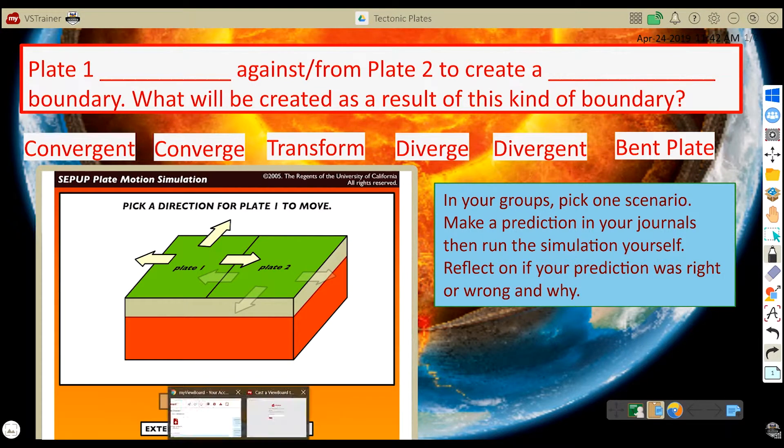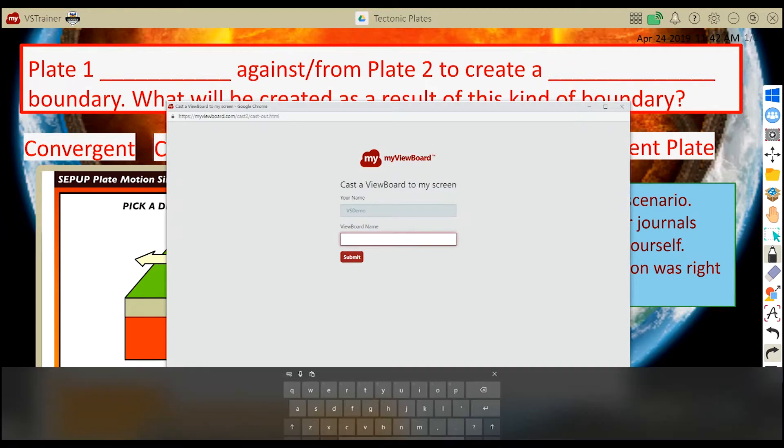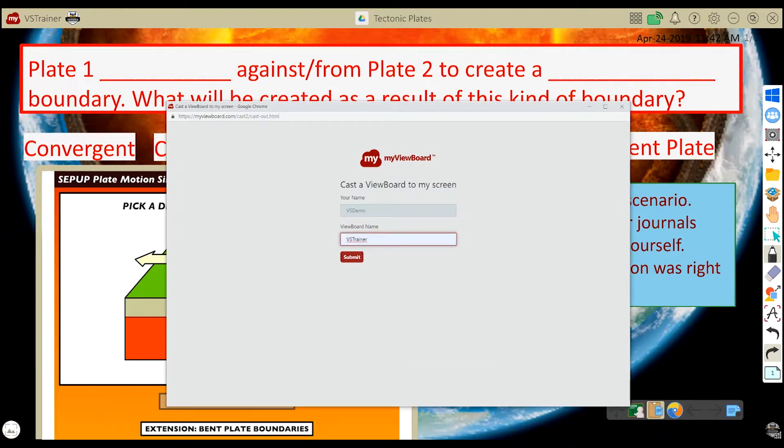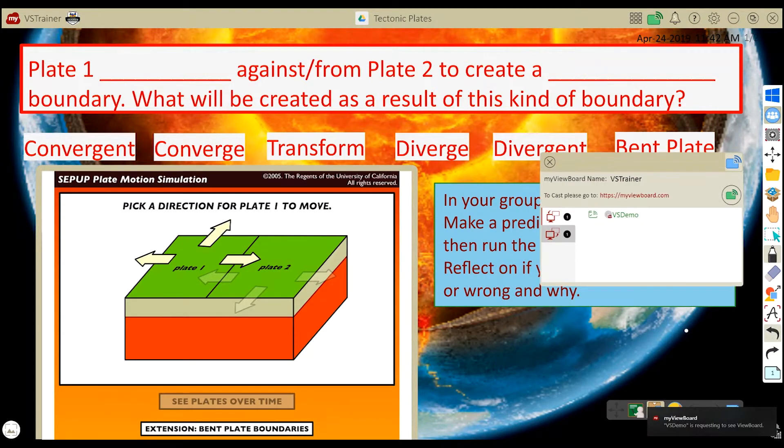So I go back into Chrome and type in VSTrainer, click submit. Then in my viewboard, if I go to that share window...